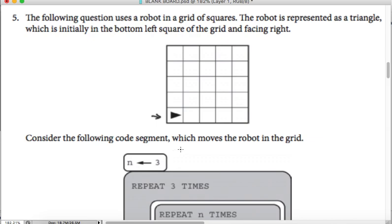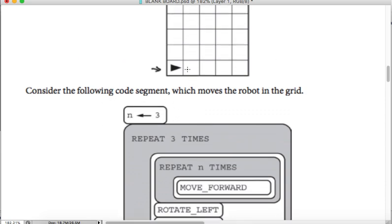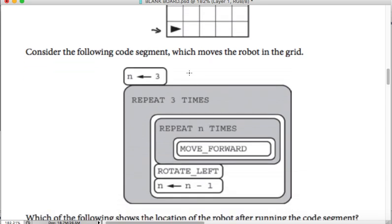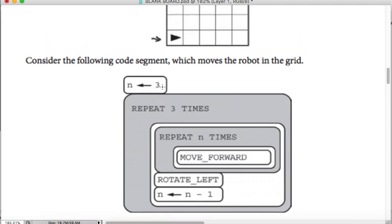Consider the following code segment which moves the robot in the grid. We have to apply this on the robot and understand what the algorithm tells us. At the end, we are supposed to find the final position of the robot. The question asks which of the following shows the location of the robot after running the code segment. So let's read the code segment.